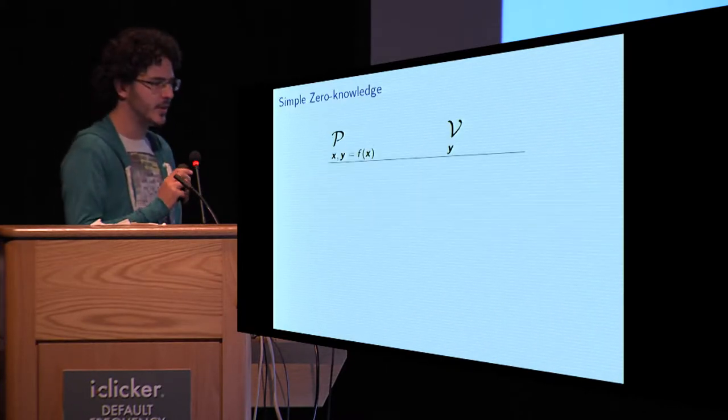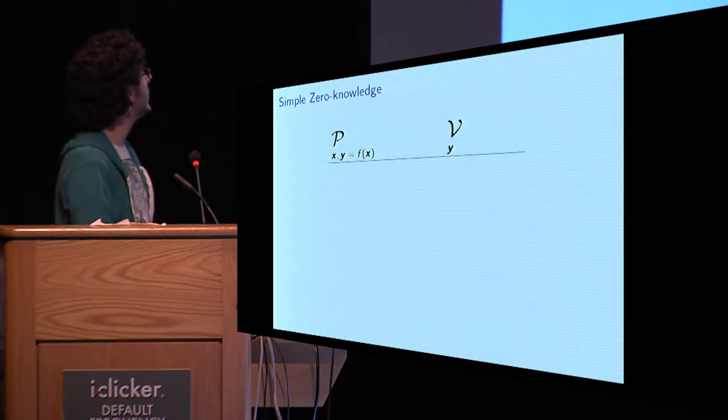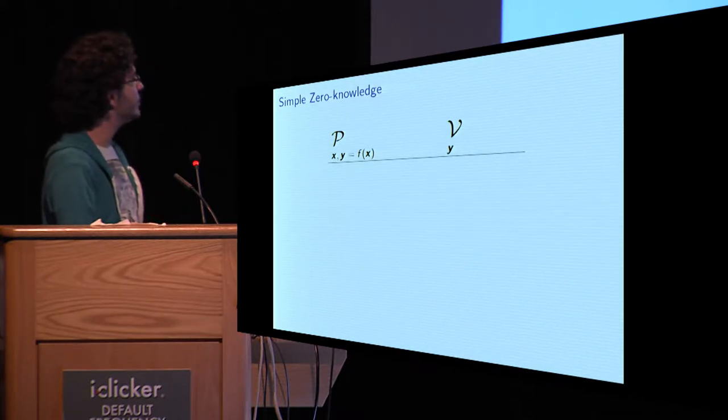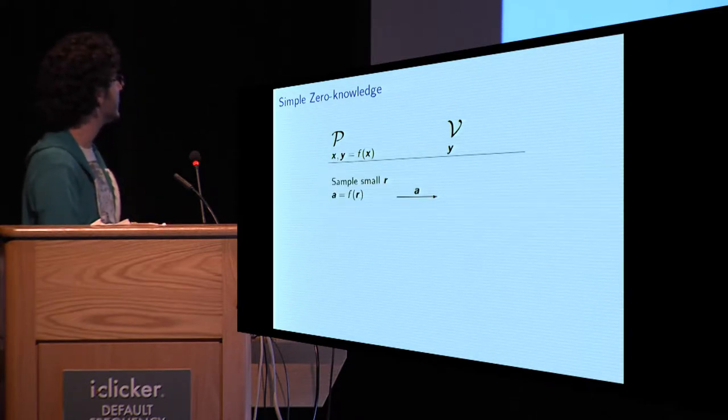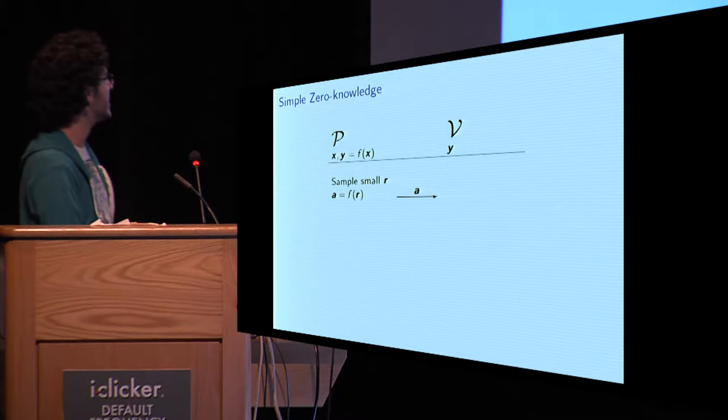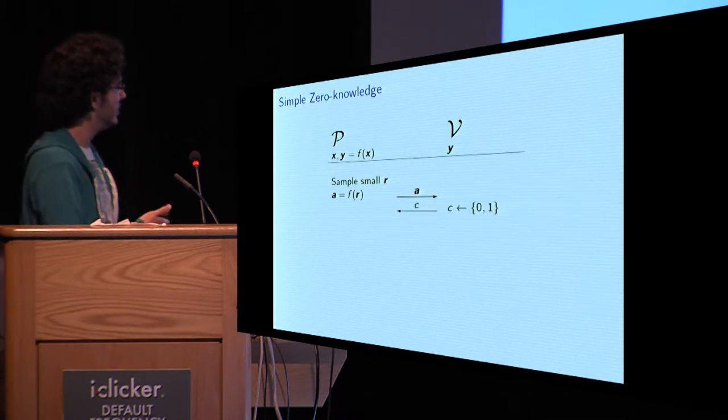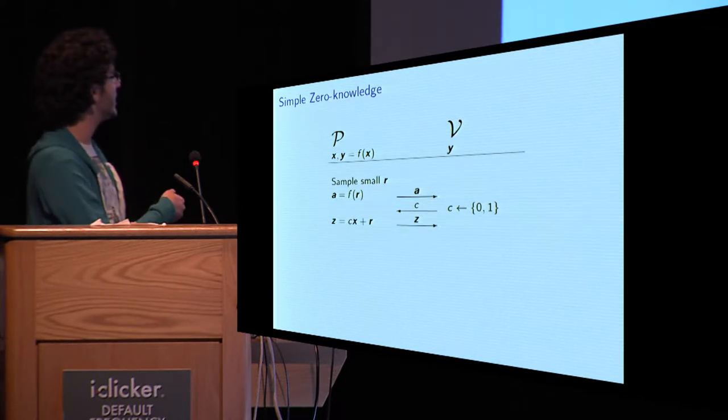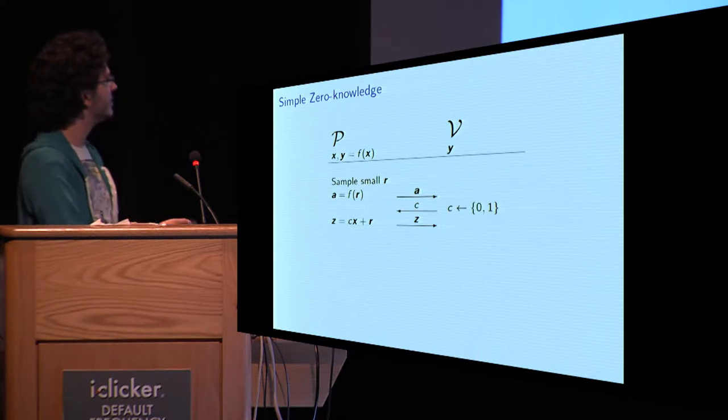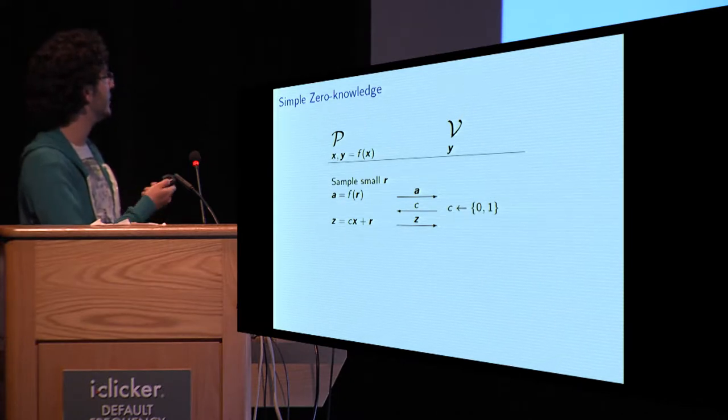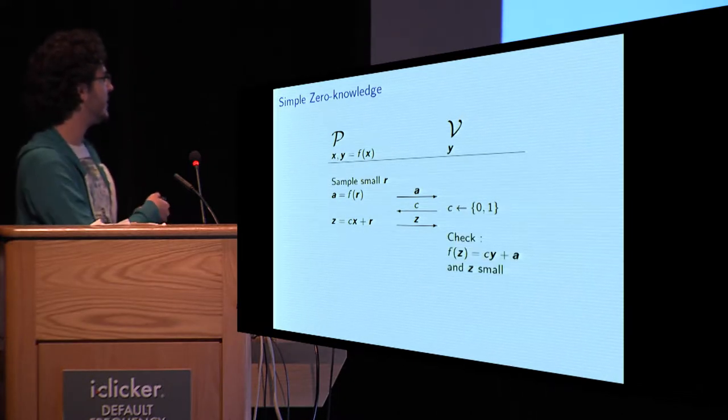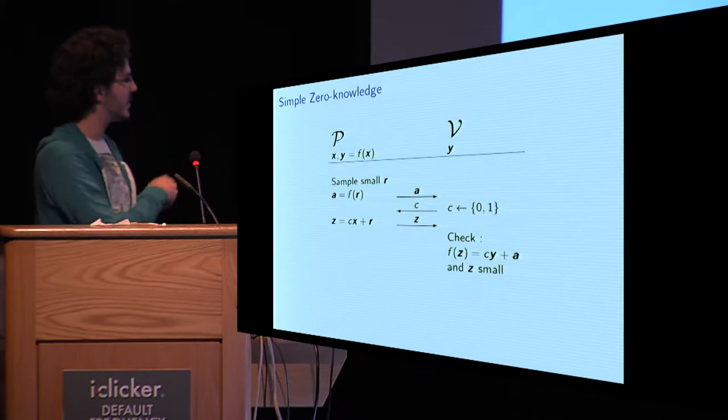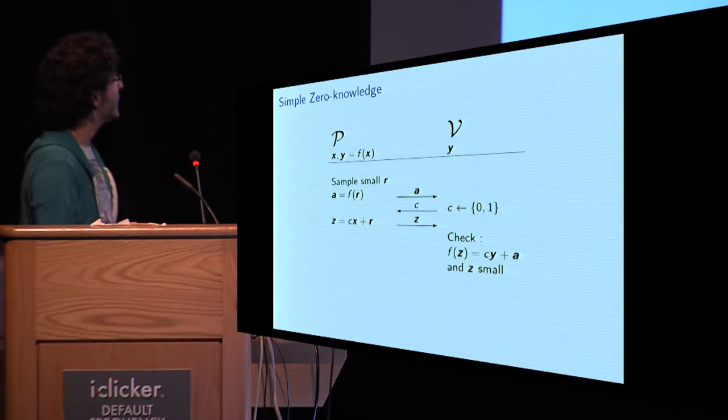Let's give a very simple example of zero-knowledge. We have a prover who knows a vector X and its image Y, and a verifier who knows only Y. The prover will start by sampling a small randomness R and computing its image A, send A to the verifier, who sends back a challenge in 0, 1. The prover computes Z, which is either X plus R if C equals 1 or just R if C equals 0. Sends Z back to the verifier, who checks both that F of Z equals C times Y plus A and that Z is small.